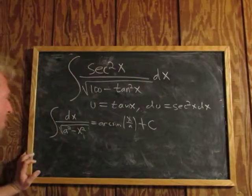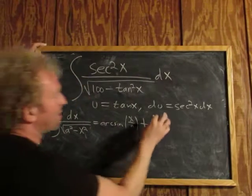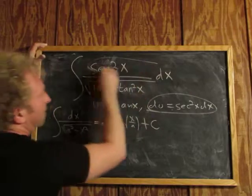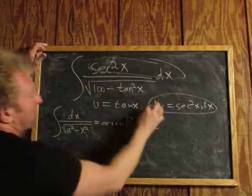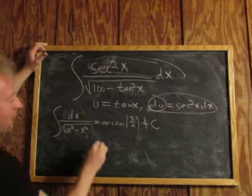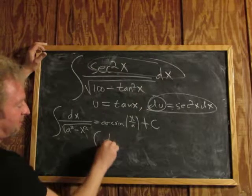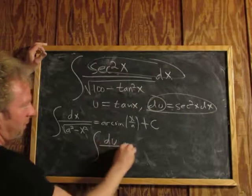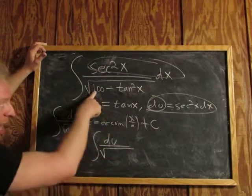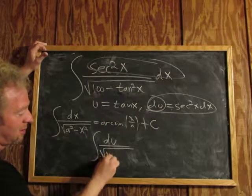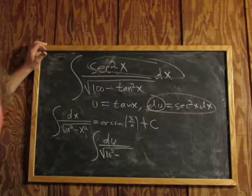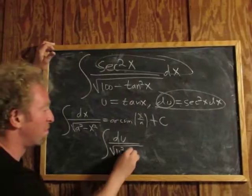And so now we're ready to make a substitution, right? So our du is right here. That's our du, that right there. So it's going to be the integral of du over the square root of 100, that's 10 squared, minus u squared, because u is tan x. Beautiful stuff.